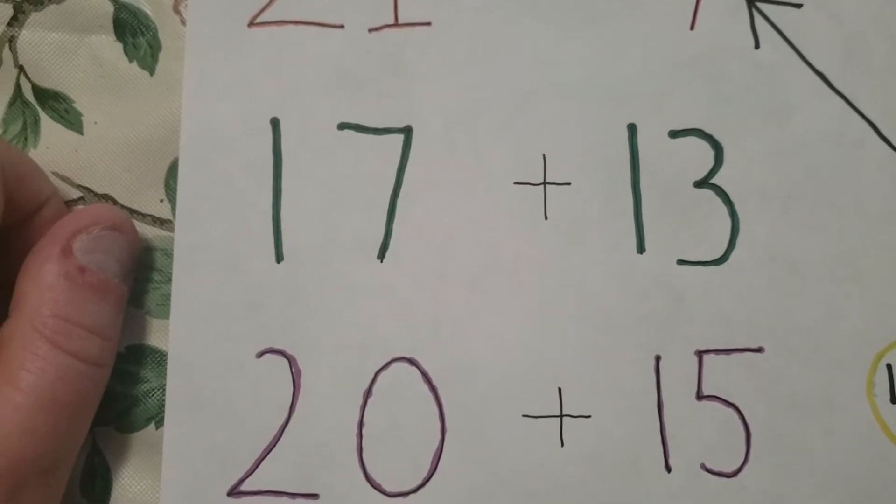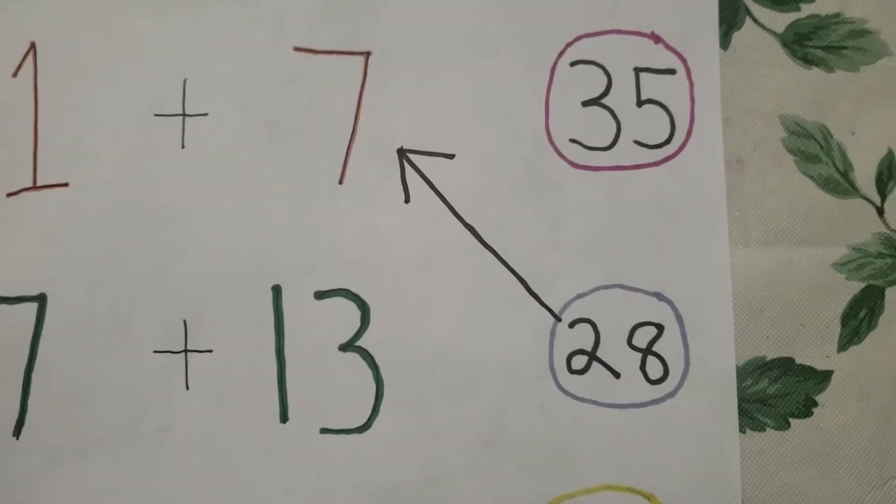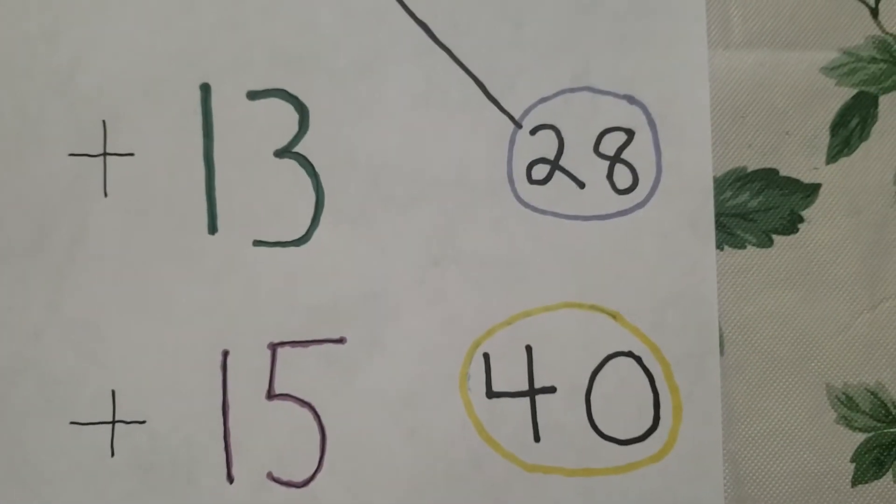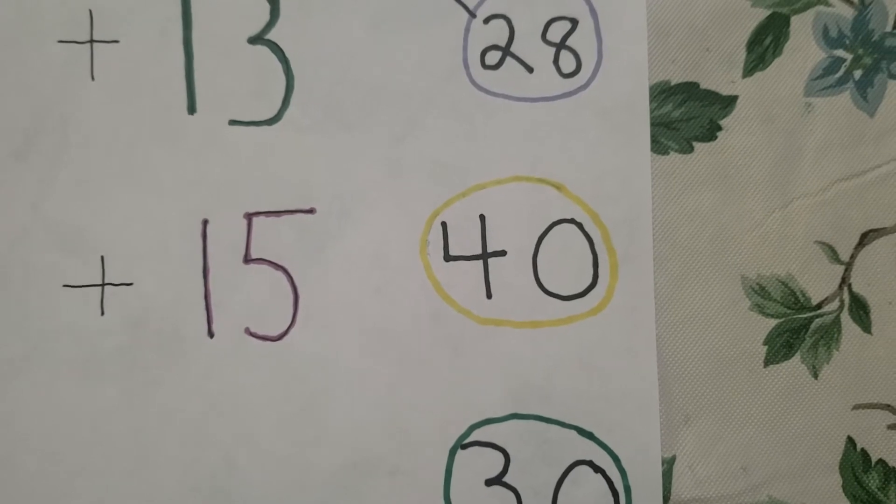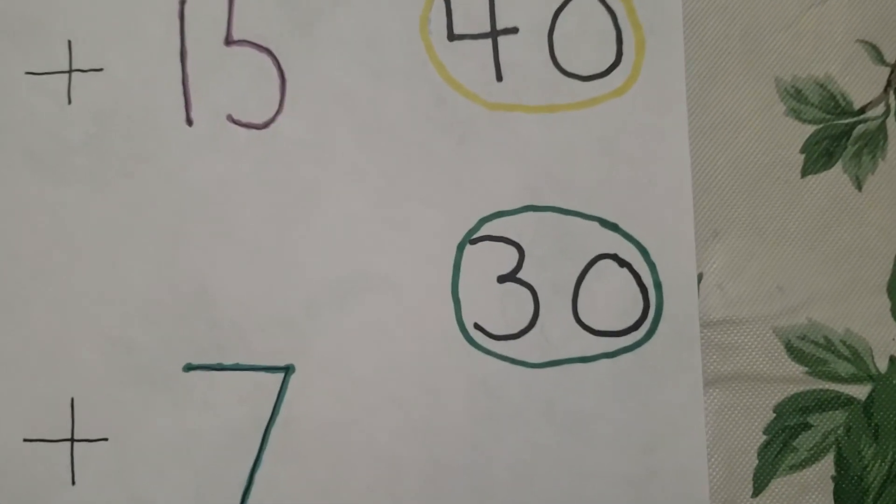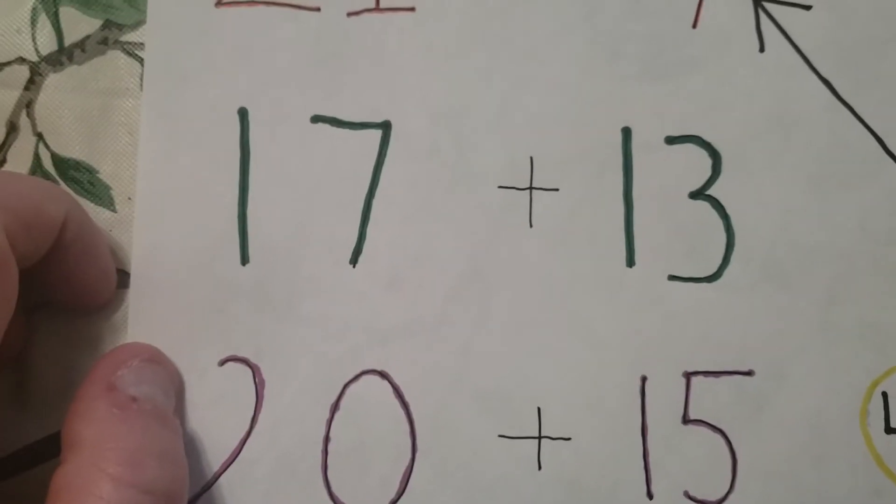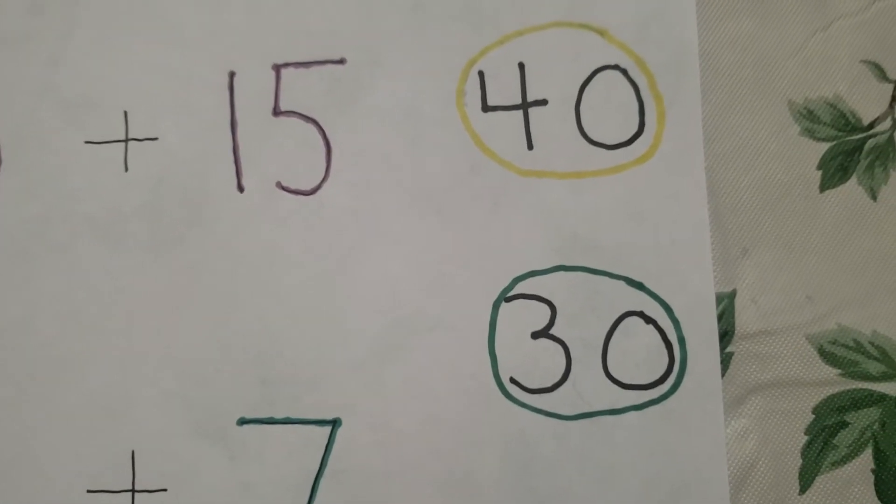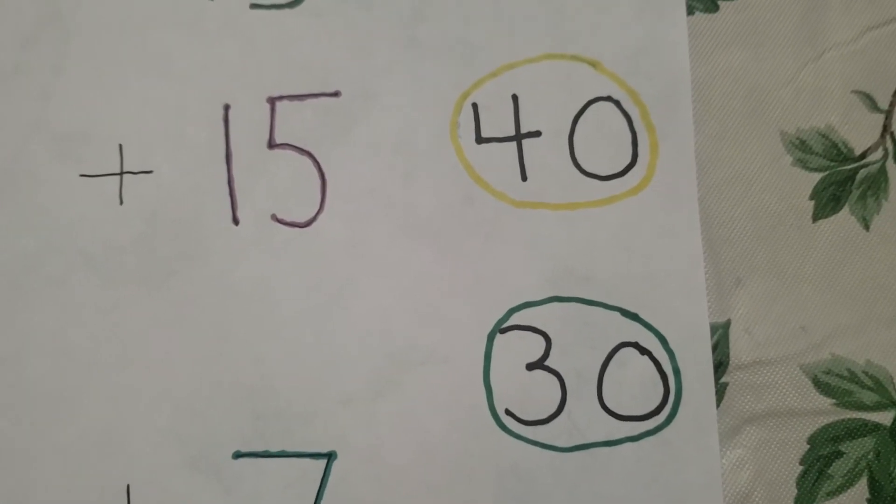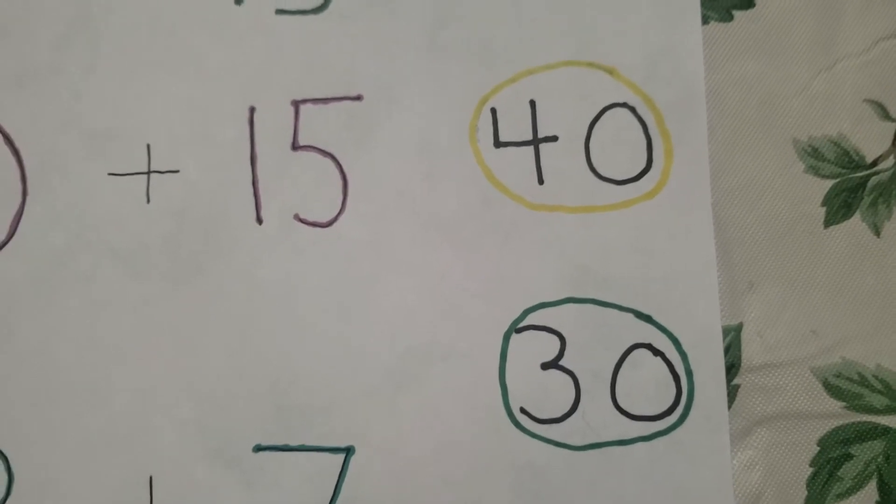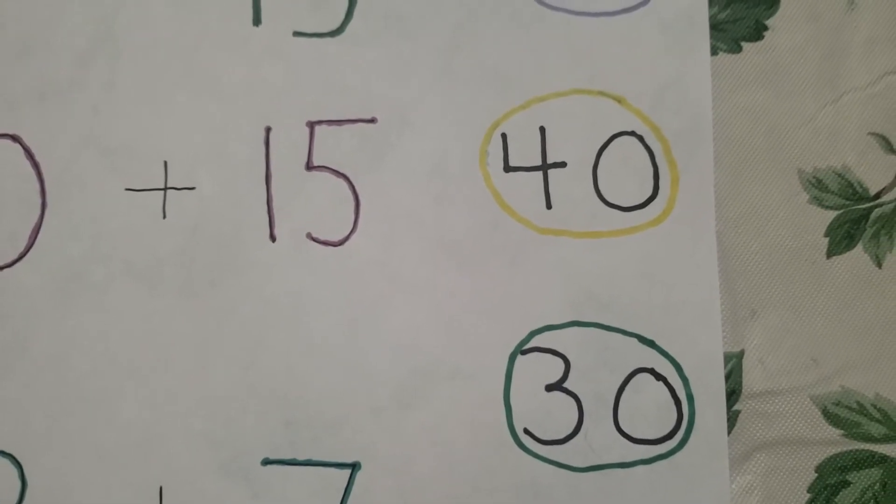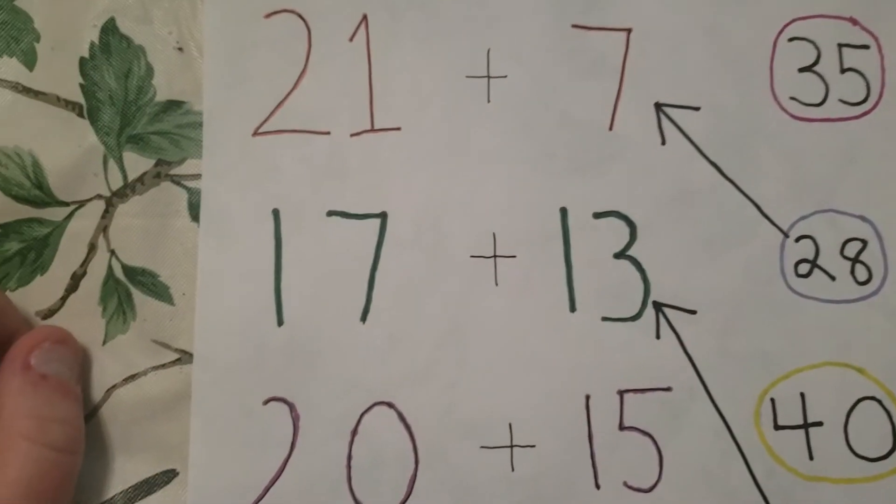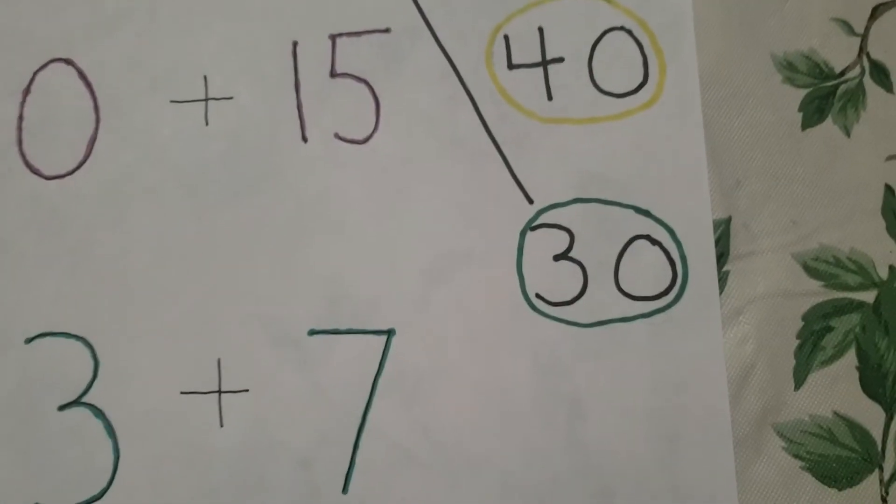17 plus 13. Let's see. Is it 35? Is it 20? Oh, we can't do 28. Is it 40? Or is it 30? Let's see. 17 plus 13. I think it equals 30. What do you guys think? Right? Okay. Let's draw an arrow from 30 to 17 plus 13. There we go. 17 plus 13 equals 30.